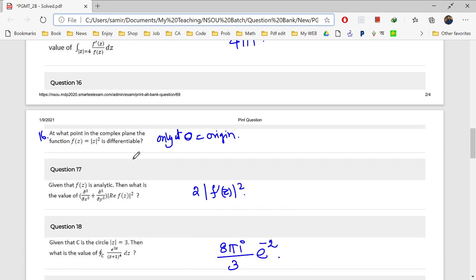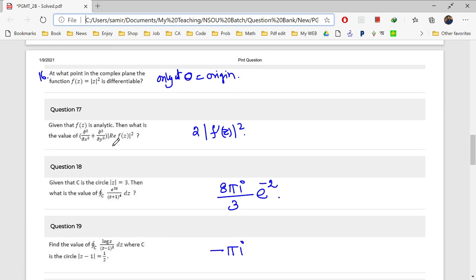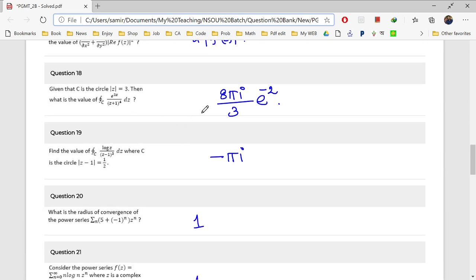16. Eta answer. Mod z square where is it differentiable. Only at origin. Eta differentiability question. Only at origin. 17. Eta answer is minus 2.